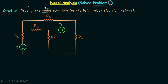By the nodal equations we mean the KCL equations for each non-reference node. So we need to develop the KCL equations for each non-reference node for this electrical network. In step number one of nodal analysis we identify the total number of nodes in the given network. In this network we have one node here, second node here, third node here, and the fourth node here. So the total number of nodes is equal to four.